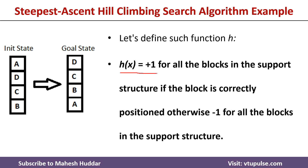h(x) is equal to plus 1 for all blocks in the support structure if the block is correctly positioned. For example, block b does not have any support structure because below b we do not have any blocks. But if we consider c, c has a support structure containing b. If b is correctly positioned, we add 1 to the heuristic value; if it is not correctly placed, we subtract 1 from it.